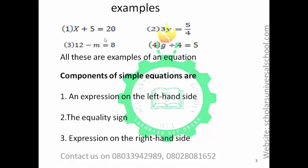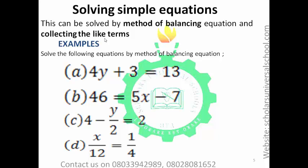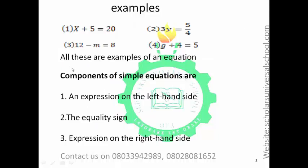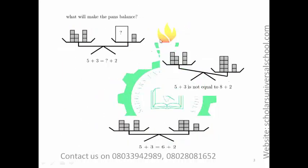Let's look at all these examples together. There are methods by which we can solve equations, especially simple equations. We have the balancing method and the collecting like terms method. We are starting with the balancing method. The diagram I showed you earlier is an example of the balancing method — we are looking for the value that will make one side equal to the other side.